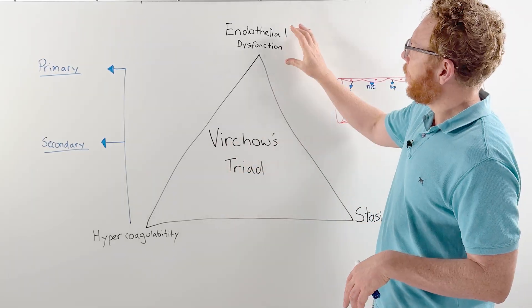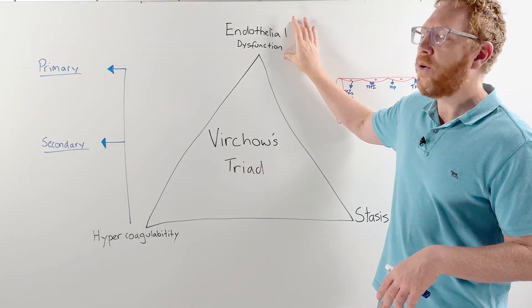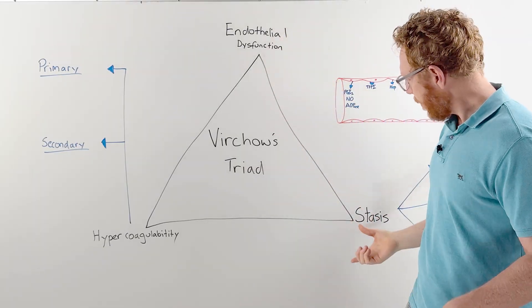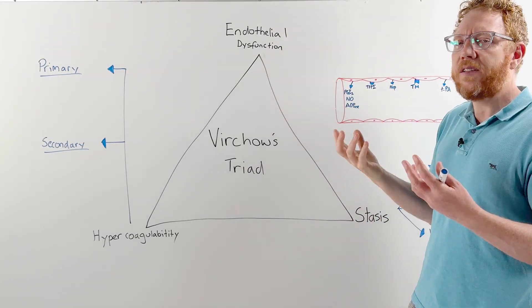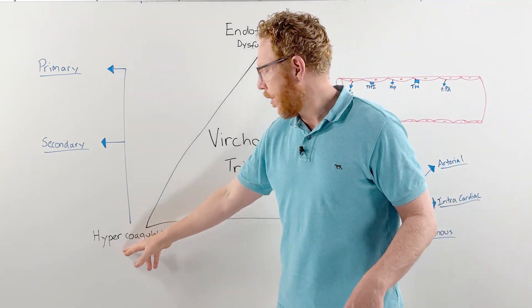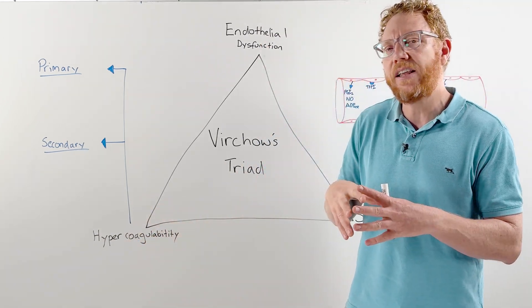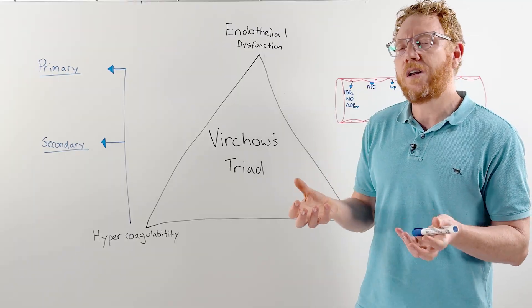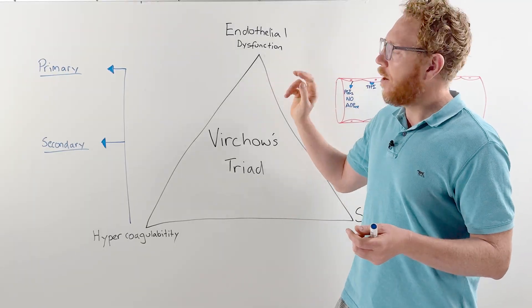The three parts are endothelial dysfunction or endothelial injury, stasis which means sluggish or decreased blood flow, and hypercoagulability, which means the likelihood of the blood to want to clot. We're going to start with endothelial dysfunction.